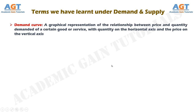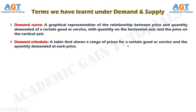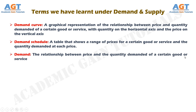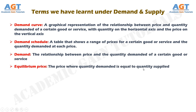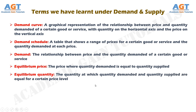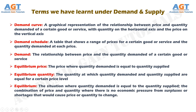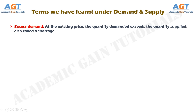Let's review key terms from demand and supply. The demand curve is a graphic representation of the relationship between price and quantity demanded, with quantity on the horizontal axis and price on the vertical axis. The demand schedule is a table showing a range of prices and the quantity demanded at each price. Demand is the relationship between price and quantity demanded. The equilibrium price is where quantity demanded equals quantity supplied. The equilibrium quantity is the quantity at which demand and supply are equal for a certain price level. Equilibrium is the situation with no economic pressure from surpluses or shortages. Excess demand is when quantity demanded exceeds quantity supplied — also called a shortage.